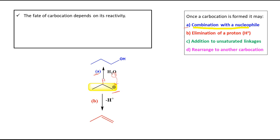The second possibility is elimination of a proton. From this carbocation, if a proton is removed from the adjacent position — without the electron density, which is why it is called a proton — we will get a C=C double bond. This is elimination of a proton, giving us a neutral species. So in both process A and process B, we are getting some neutral species.